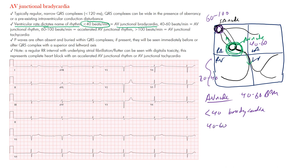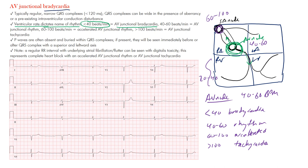So anything less than 40 would be a junctional bradycardia — a slower rhythm. Anything between 40 and 60 is simply the junctional rhythm, its normal rate, just like sinus rhythm is 60–100. If the rate is between 60 and 100 beats per minute, we call that an accelerated junctional rhythm. And if it's over 100, we call that a junctional tachycardia — above 100 beats per minute, just like all the other tachycardias.